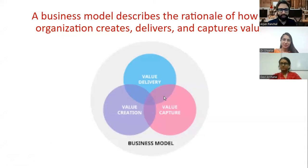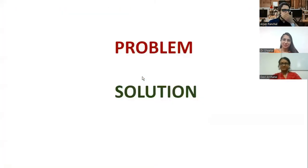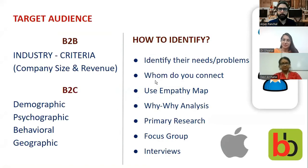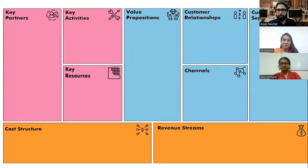A business model always starts with problem and solution. In startups, we always talk about problems and solutions. There is a problem statement and a solution, then you start a business model. My question to you is: what do you think is the most important block in the nine-block business model?